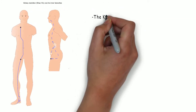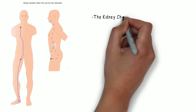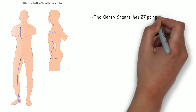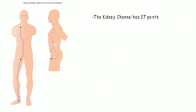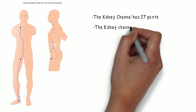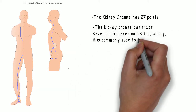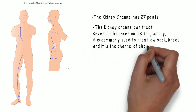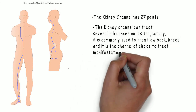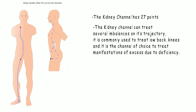The kidney channel has 27 points. It starts at the sole of the foot at kidney one, ascends along the medial aspect of the leg to the abdomen and chest. The kidney channel can treat several imbalances on its trajectory. It is commonly used to treat low back, knees, and it's the channel of choice to treat manifestations of excess due to deficiency.